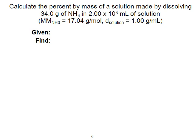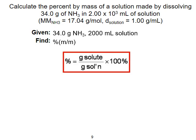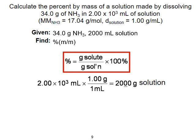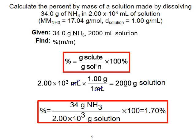Let's calculate the percent by mass of the same solution. We use the formula: mass of solute divided by mass of solution, times 100. Since we already have the mass of the solute — ammonia — in grams, we only need to convert the volume of solution into grams using the density. 2,000 milliliters times 1 gram per milliliter gives us 2,000 grams of solution. Substituting into the formula gives us a 1.7% by mass solution of ammonia.